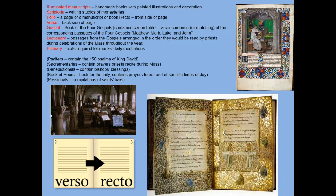The books are made essentially of calf skin that has been specially treated. Each page is known as a folio. The front of the folio is called the recto and the back side is the verso.